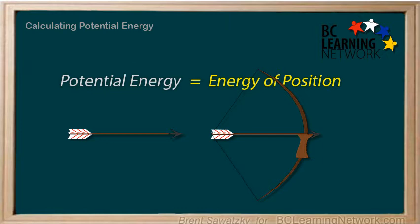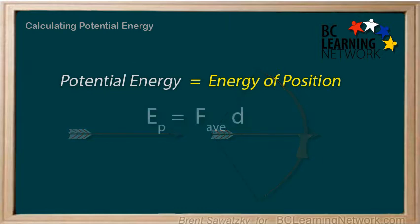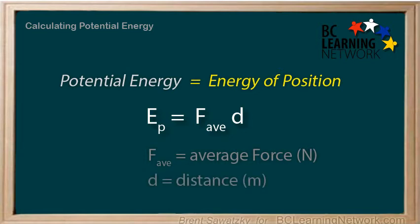We can calculate the arrow's potential energy using the equation Ep, for potential energy, equals Fav, or the average force applied to the arrow, times d, the distance over which this force is applied. The force is in newtons, and the distance is in meters.